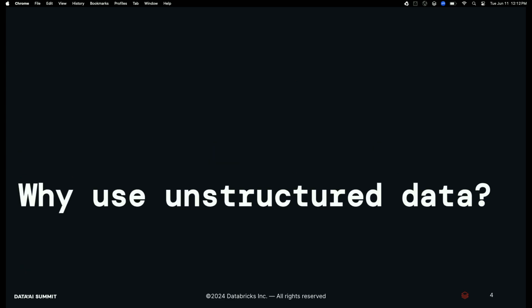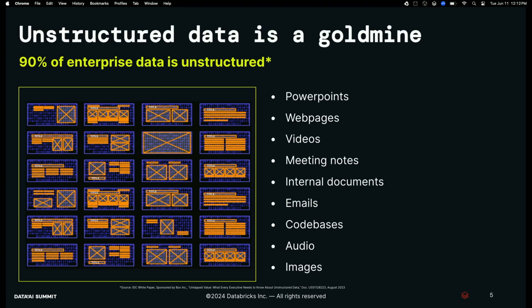So why use unstructured data? If you're in this session, you probably already have a good idea, but let me motivate the case. Traditionally in ML, we think about tabular data and time series data. But when we do Gen AI, we really need to tap into all of our data sources. A Dropbox survey estimated up to 90% of enterprise data is unstructured — everything from emails to codebases to web pages to PowerPoints. This is a total treasure trove. You might have your annual figures in a structured database, but you might also have a document where you presented those results to stakeholders with interpretation on top — how you should read those numbers and what they mean.